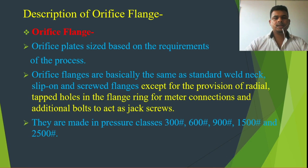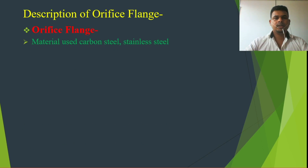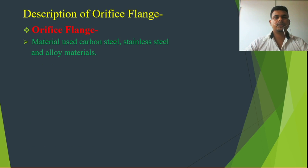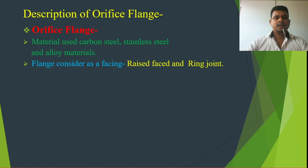Orifice flanges are made in pressure classes 300, 600, 900, 1500, and 2500. For materials, carbon steel and alloy steel materials are used. Regarding flange facing, we can see there is raised face and ring joint facing available.